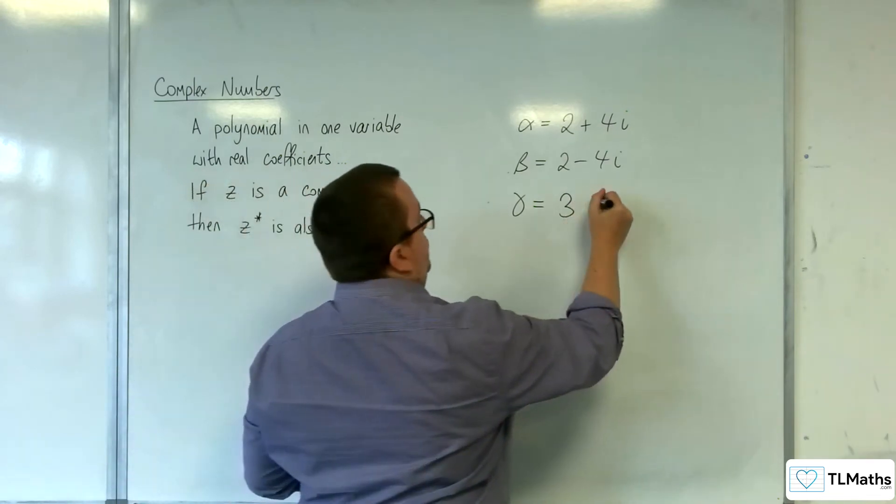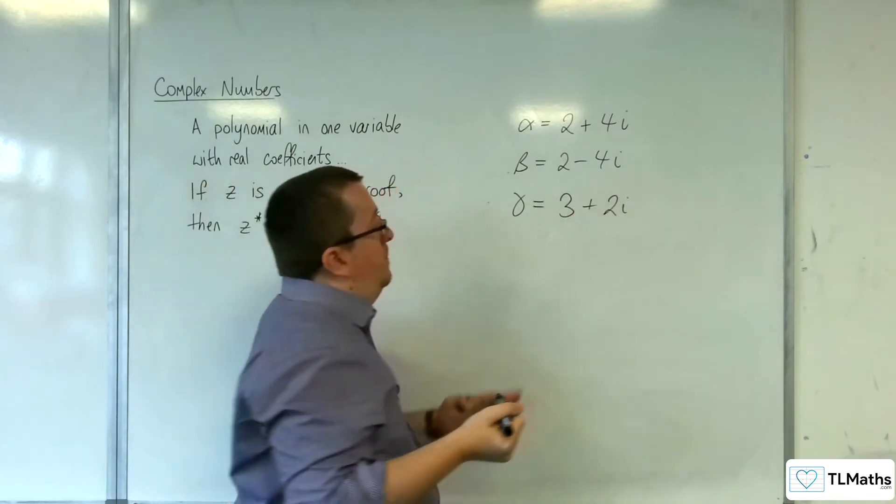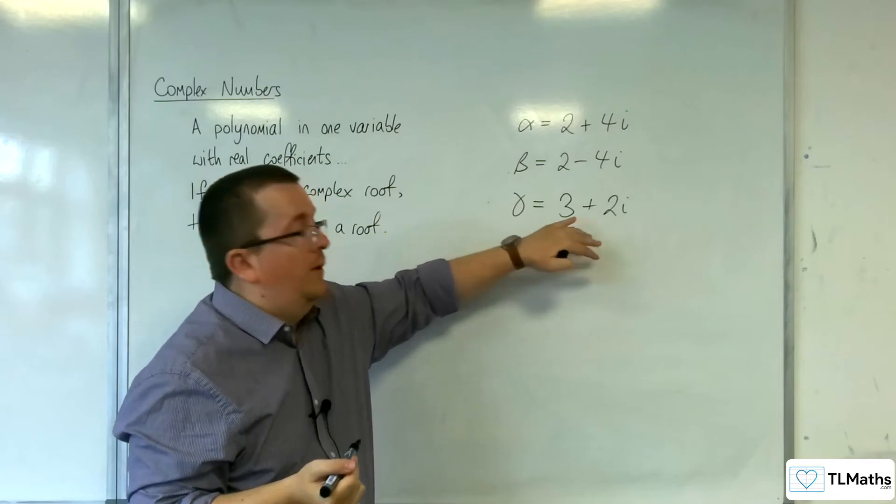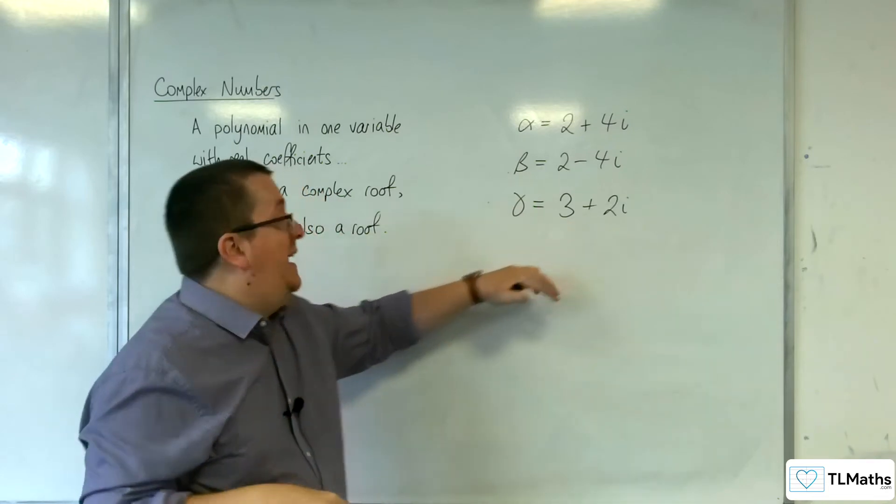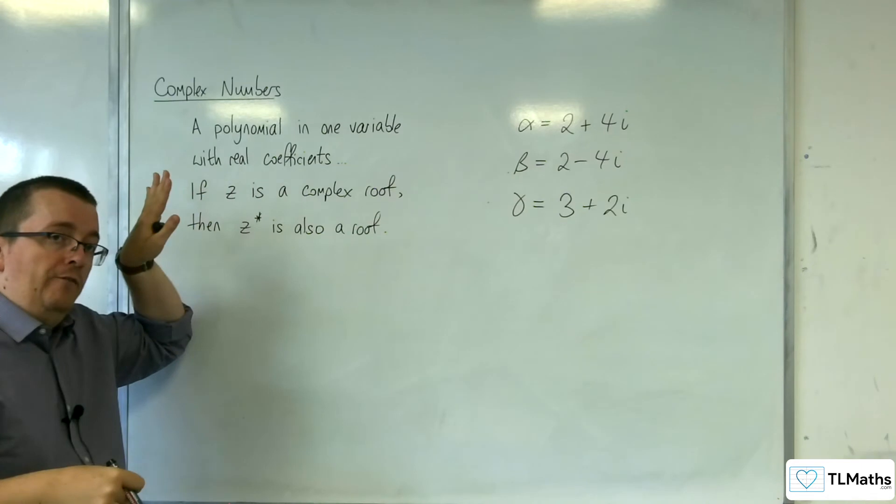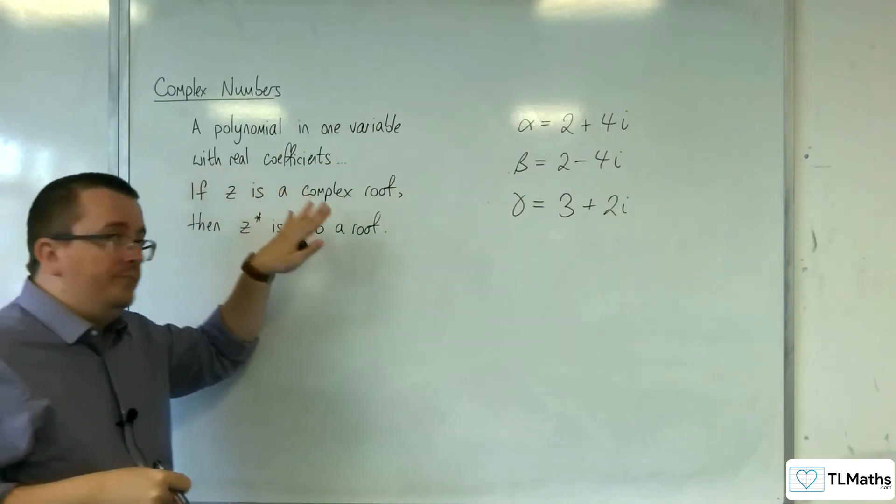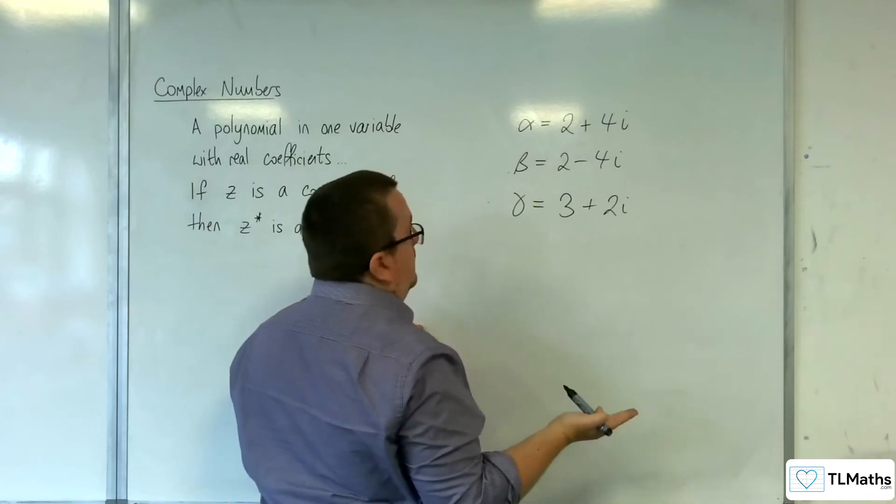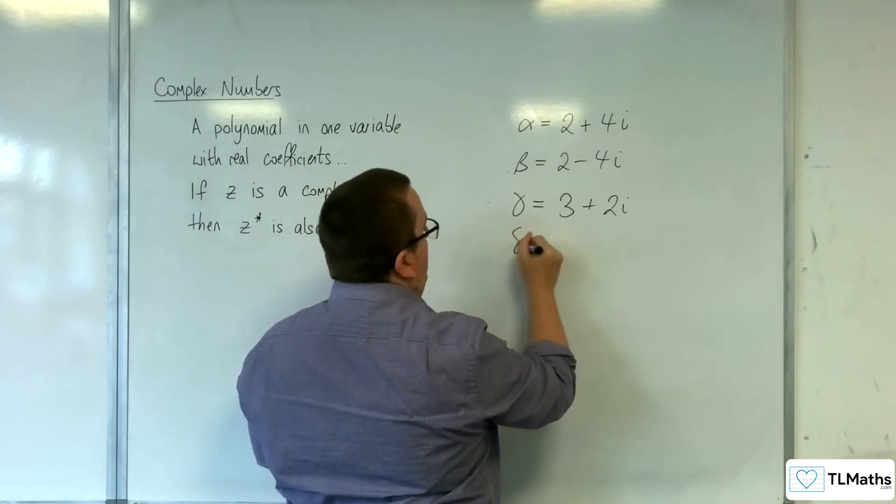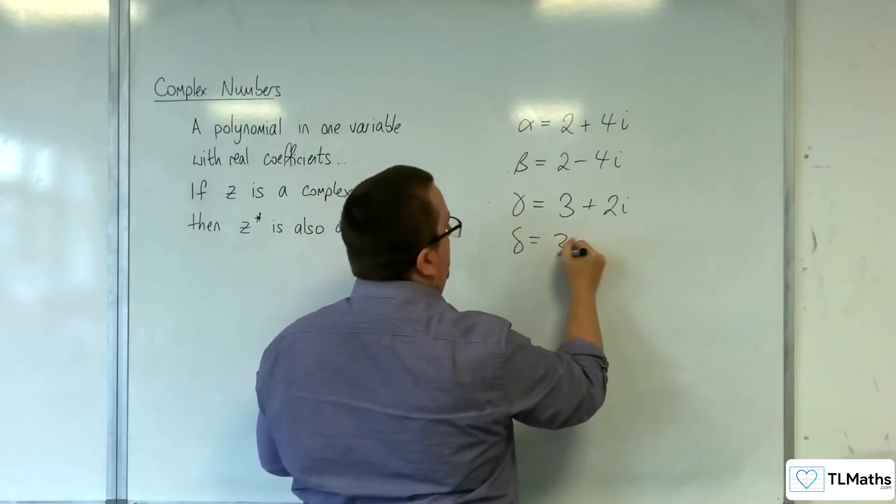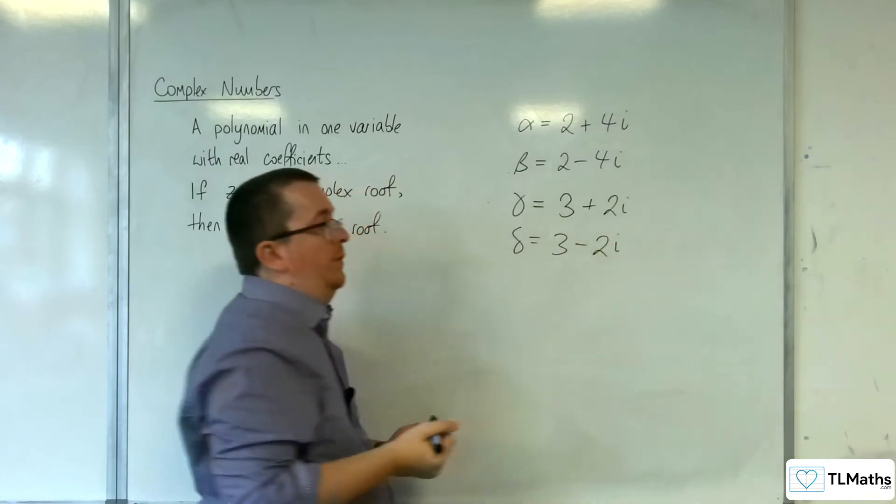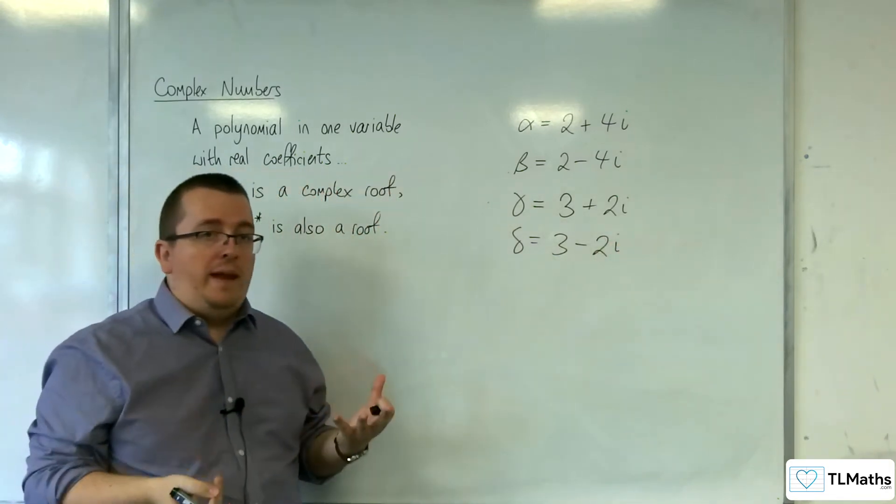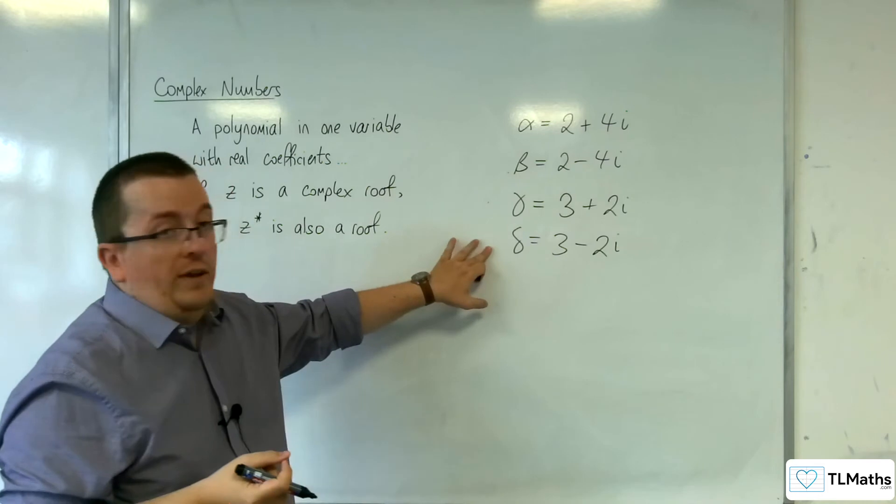So I can't have 3 plus 2i, because the complex number roots have to appear in pairs because of the complex conjugate root theorem. So if we had 3 here, then I would need to have another root, delta, that is the complex conjugate pair. So now I would have a quartic.